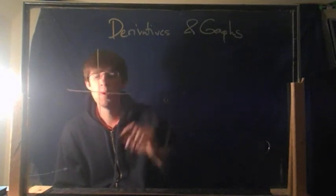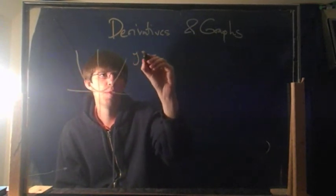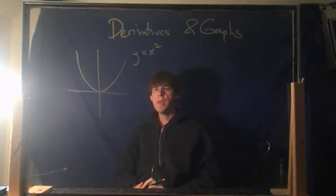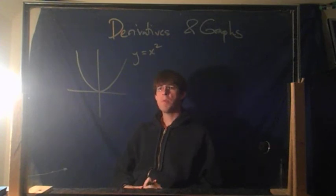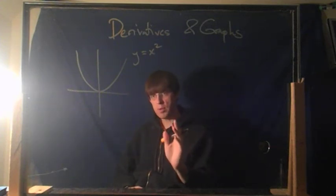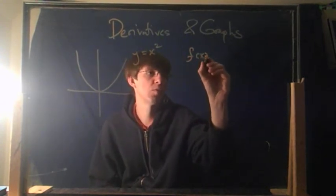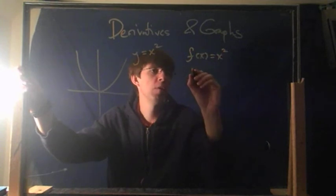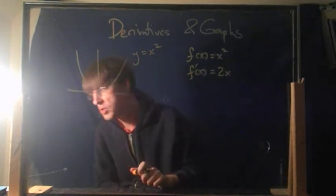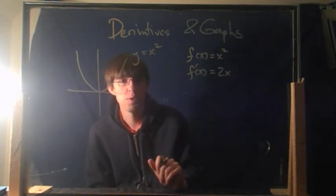How about the old y equals x squared, everybody's favorite example. First of all, let's remember what the derivative is supposed to represent. The derivative at any point tells you the slope at that point. If f(x) equals x squared, we already know — f prime of x equals 2x. That was kind of a lengthy computation, but it turned out that was the answer.